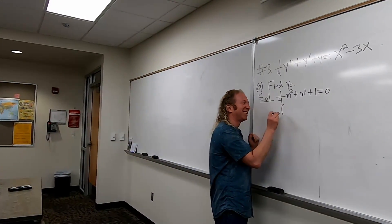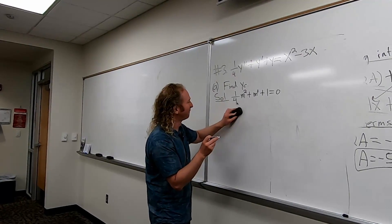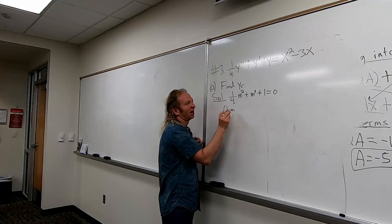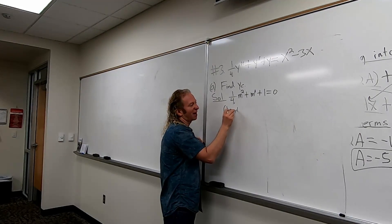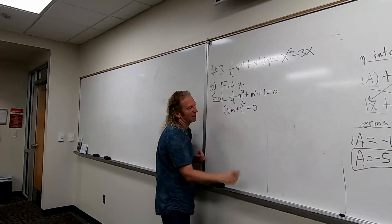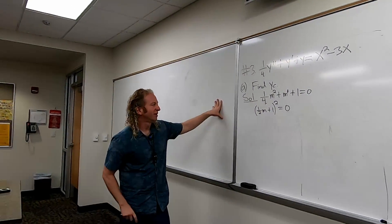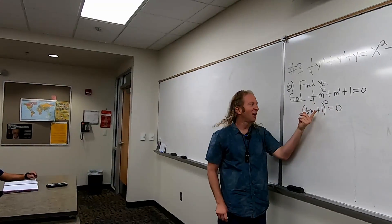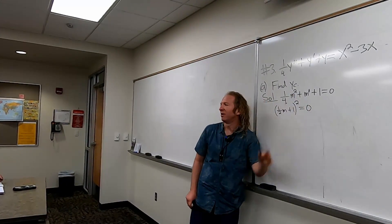Okay, so this should factor. This is parentheses one-half M. I think it's this. I'm taking a chance here with points. Let's see. If you square this, you get this. One times one is this. And then this times this times two is that. It's right.